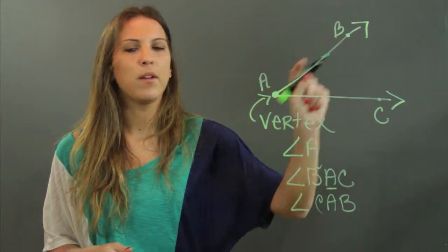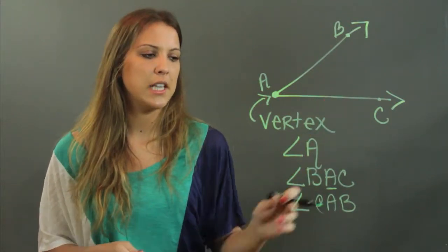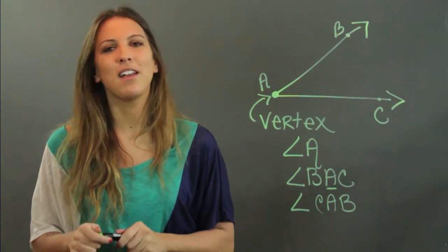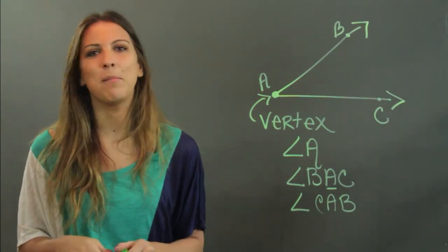So the vertex is the common point that begins an angle, and your angle is actually named by it, or having the vertex in the middle of its name. My name is Maria, and I just showed you what the common point beginning an angle is.